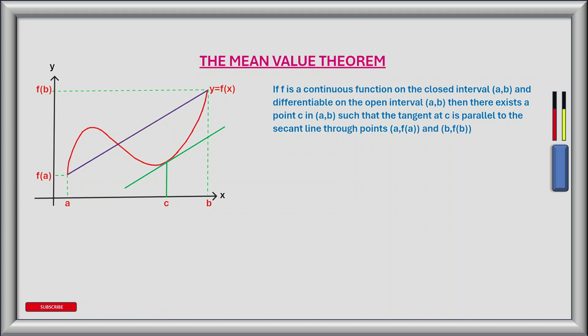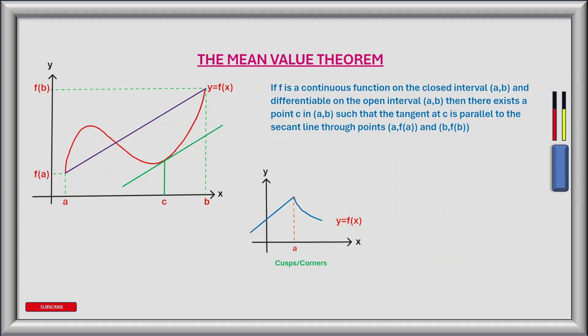It also states that the function must be differentiable on the interval a b. Let's see some examples where a function is not differentiable. This function here has a cusp or a corner and is not differentiable at point a on the x-axis. This function here is discontinuous at point a and therefore not differentiable at point a. And this function here is not differentiable because it has a vertical tangent at point a on the x-axis.